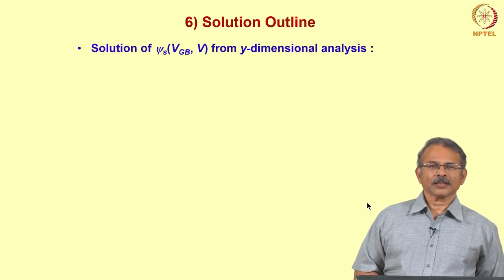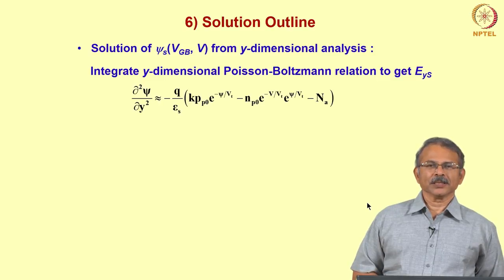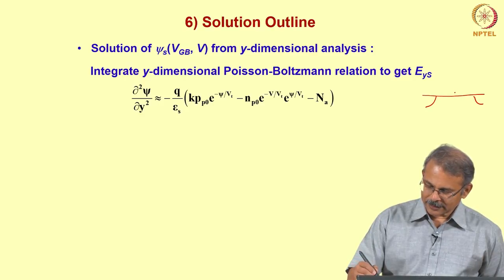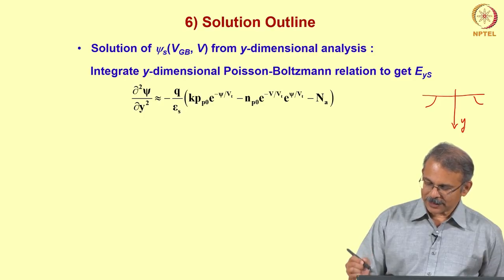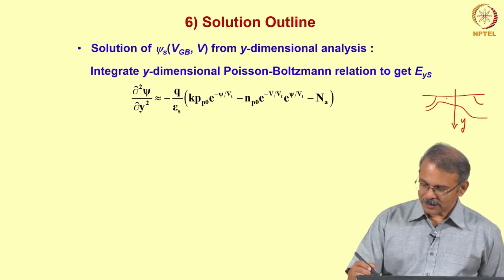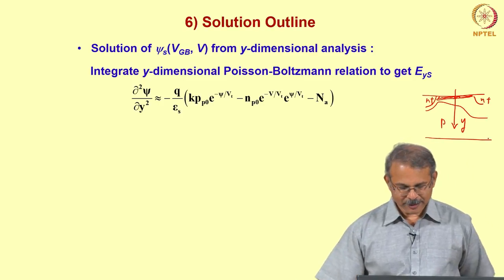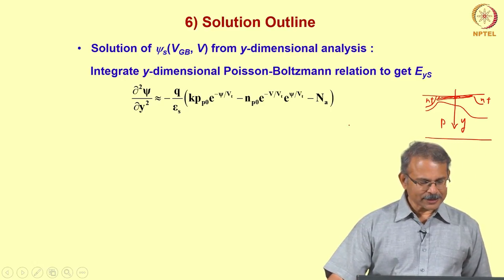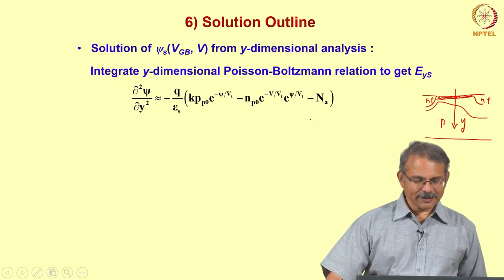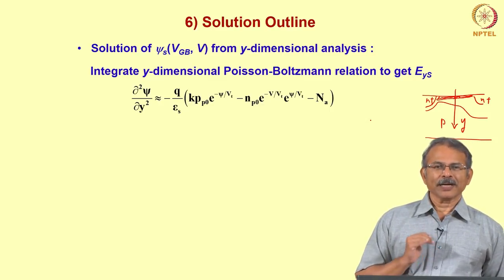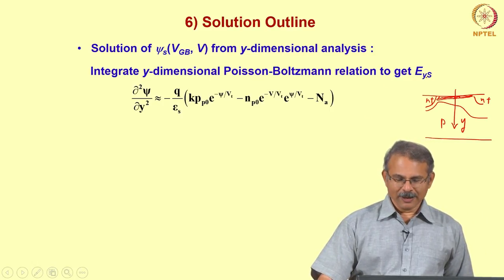The steps were as follows. You integrate the y-dimensional Poisson-Boltzmann relation to get Eys, that is the y-directed surface electric field. If I want to show you: this is your source and drain and this is your y direction. You are getting a field in the y direction. This is your depletion region, the so-called inversion region is n+ n+ and this is P. How do you get the Eys? You have ∂²ψ/∂y², and you integrate this equation once.